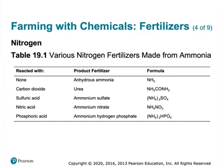Ammonium nitrate is also very common — it's also used as an explosive — and ammonium phosphate, which is nice because it adds phosphorus and other nutrients as well. Something to note though: these are all acidic. Ammonia itself and urea are not, but ammonium sulfate and ammonium nitrate are very acidic.